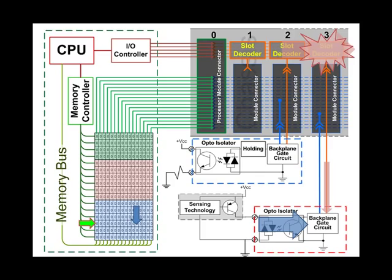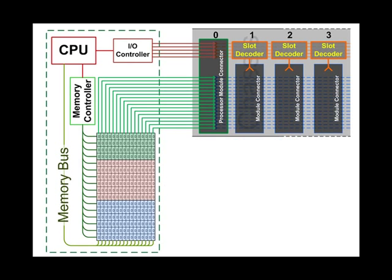A quick review of the memory layout before we execute program file ladder 2. The memory is divided into three primary sections: I/O data files, user configured data files, and the program files — ladder 2 of which is automatically executed when the processor is in the run mode.